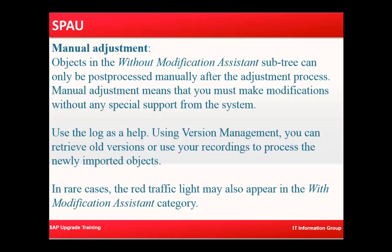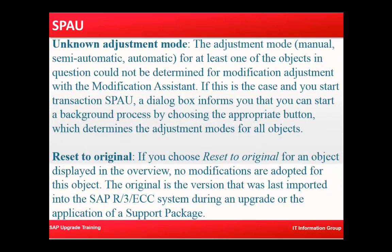In rare cases the red traffic light may also appear in the with modification assistant category. Unknown modification adjustment means the adjustment made for at least one of the objects in question could not be determined. Reset to original means no modifications are adopted for this object — the original is the version that was last imported in the ECC during an upgrade.